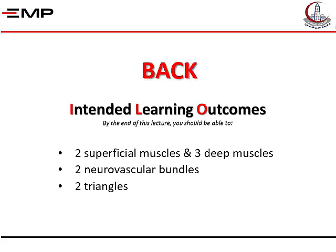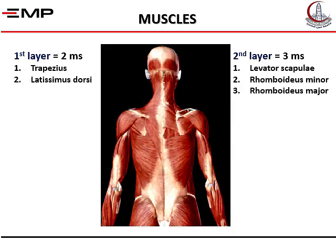In the back, we will see two superficial muscles and three deep muscles in the first two layers of the back — these five muscles. We will see two neurovascular bundles, each containing a nerve and blood vessels, and we will see two triangles. The two superficial layers of the back: to the left side is the first layer, to the right side is the second layer.